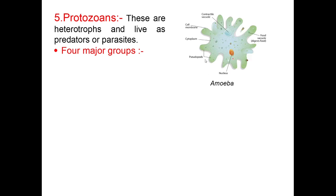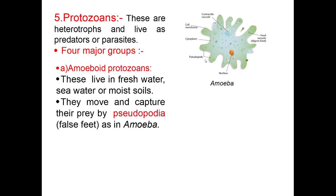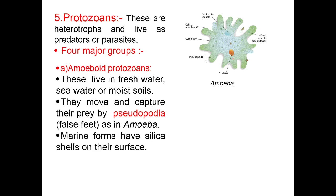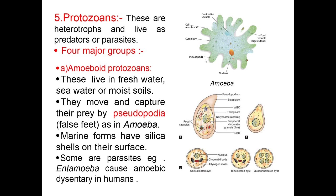Protozoans are heterotrophs and live as predators or parasites. They are divided into four major groups. First are amoeboid protozoans. These live in freshwater, seawater, or moist soils. They move and capture their prey by pseudopodia, as seen in the diagram of Amoeba. Marine forms have silica shells on their surface. Some are parasites — for example, Entamoeba, which causes amoebic dysentery in humans.